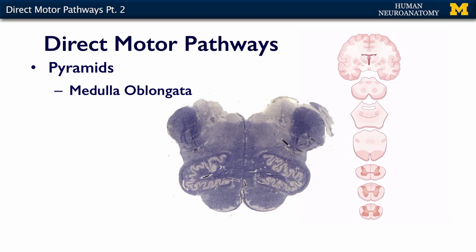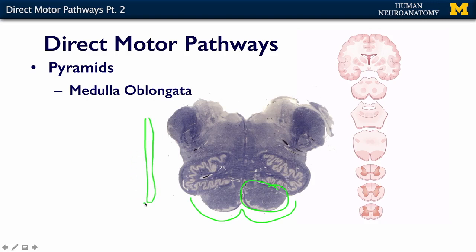Once this fiber path hits the medulla, it recoalesces and becomes the pyramid. The reason it's called the pyramid is because on the outside of the medulla you can see these two large lumps. When you're looking at the brain stem, there's a divot down the middle and a lump on each side. The olivary complex makes another lump — they called it the olive because it looks like one. But these two structures on either side are the pyramids: long, triangular ridges that run along the base of the brain stem.